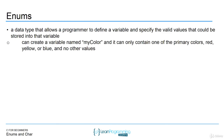Enums are a data type that allows a programmer to define a variable and specify the valid values that can be stored into that variable. An enum is very powerful — it's actually specifying a data type. It is the keyword enum, but you can basically have your own data type that includes only certain values.